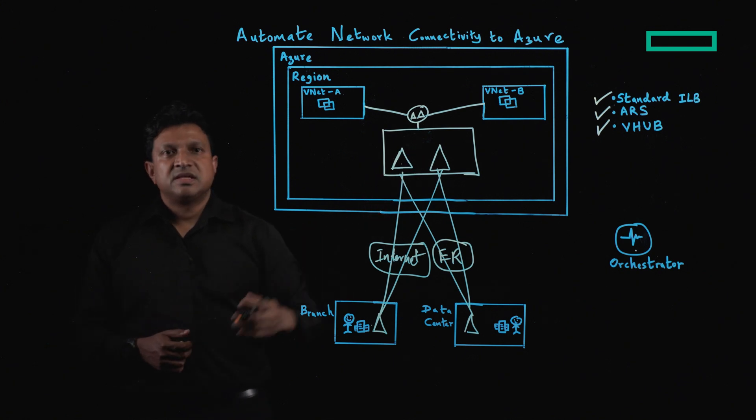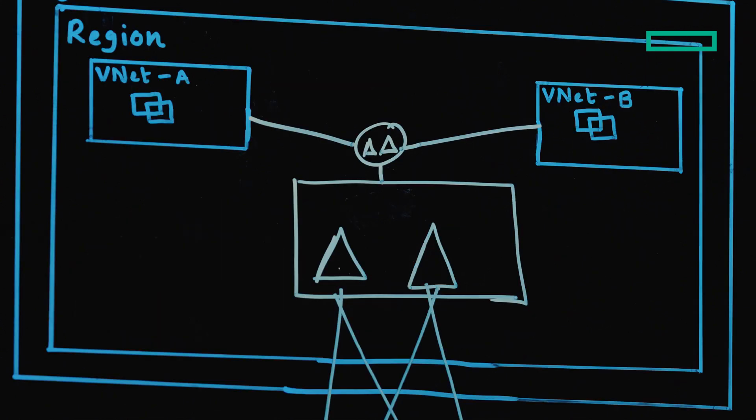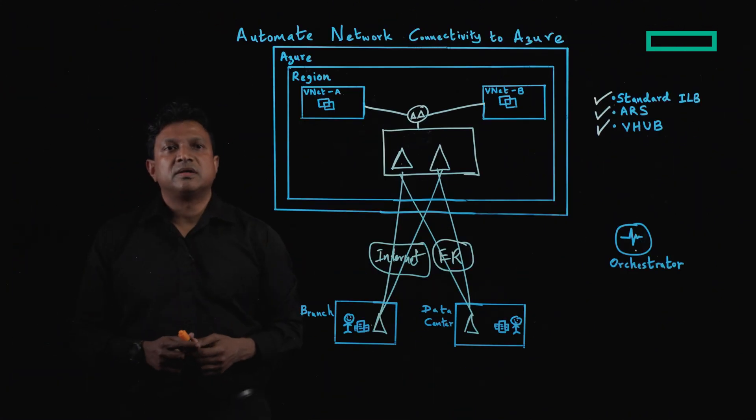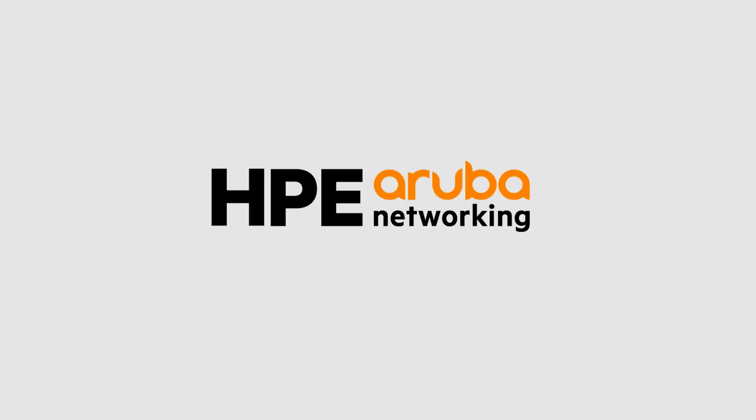As you can see, all these new architectures allow you to simplify connectivity between your on-prem networks with Azure. To learn more about connecting our SD-WAN instance with other cloud services, please visit our website.